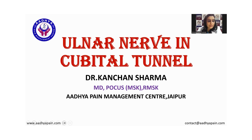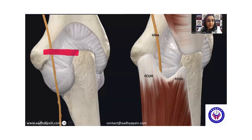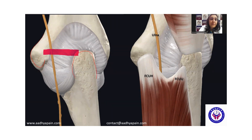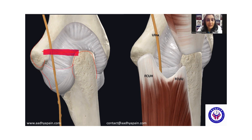The cubital tunnel is an osteofibrous tunnel located on the posterior medial aspect of the elbow joint, which has the medial epicondyle and a portion of the humerus on one side, and the olecranon process of the ulna on the other side. The roof is formed by Osborne's retinaculum or the cubital retinaculum, and the floor is formed by the posterior band of the ulnar collateral ligament and the capsule of the elbow joint.